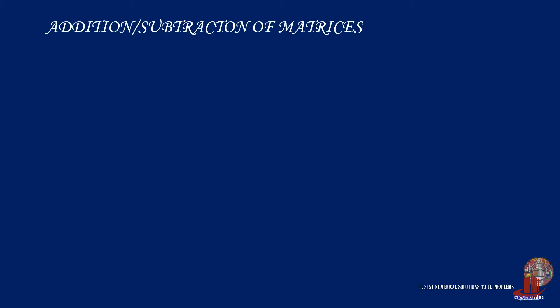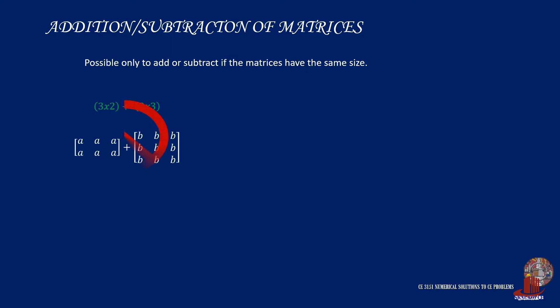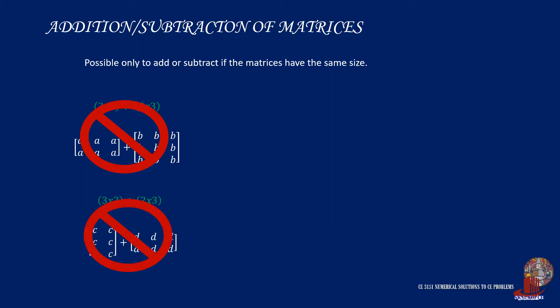The next operations are basic addition and subtraction of matrices. These operations require that matrices have the same size. Therefore, a 2 by 3 matrix cannot be added with a 3 by 3 matrix, and a 3 by 2 matrix cannot be added or subtracted with a 2 by 3 matrix. When doing addition or subtraction, elements of the same index are added or subtracted. For example, with two 3 by 2 matrices E and F, we add E11 with F11, E12 with F12, and so on.